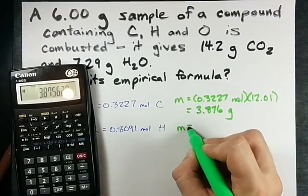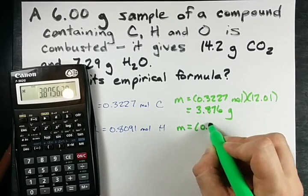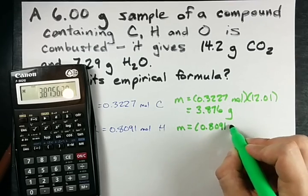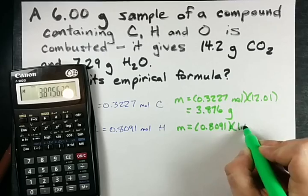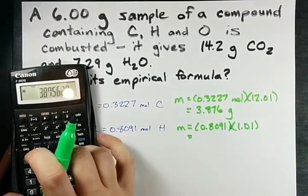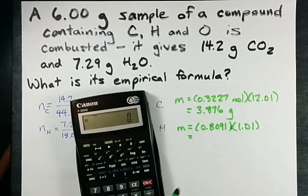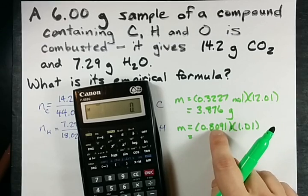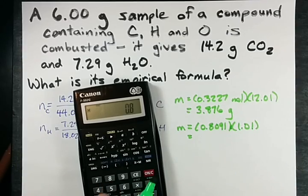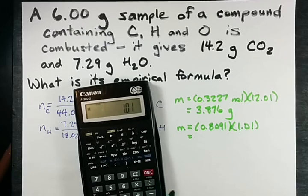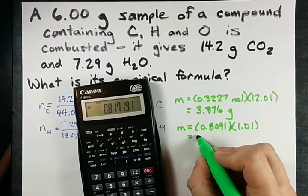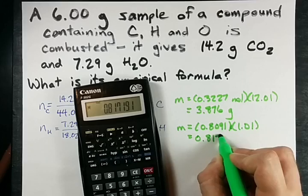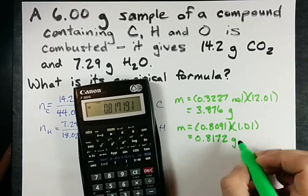So 0.3227 times 12.01 means that that many moles of carbon has a mass of 3.876 grams. We can do the same for hydrogen. 0.8091 moles of hydrogen times the molar mass of hydrogen will give me the mass that that number of moles weighs. 0.8091 times 1.01 gives me 0.8172 grams.